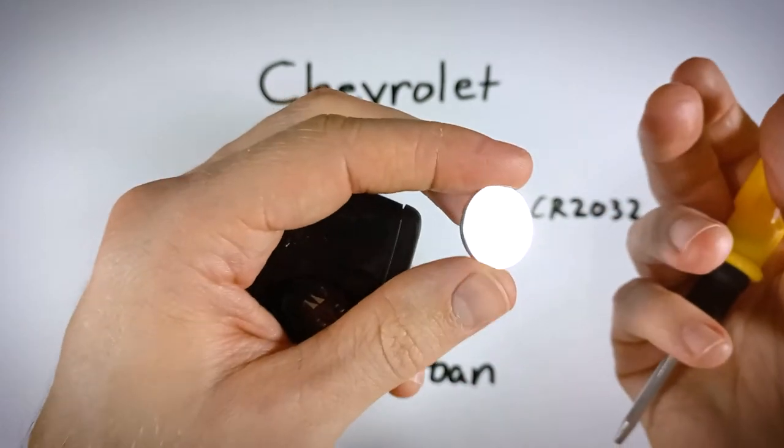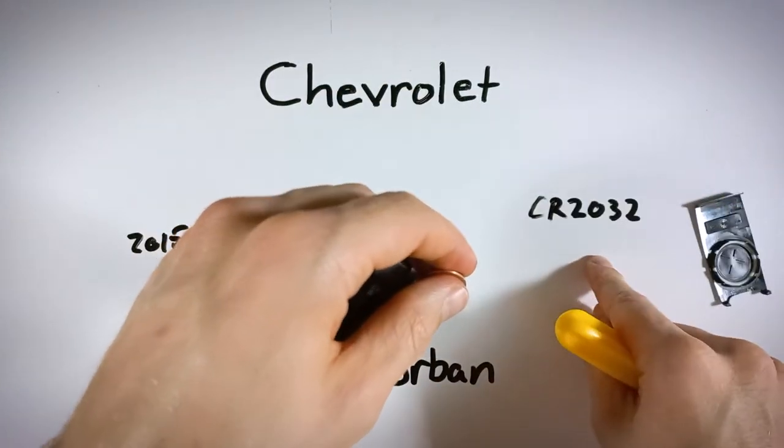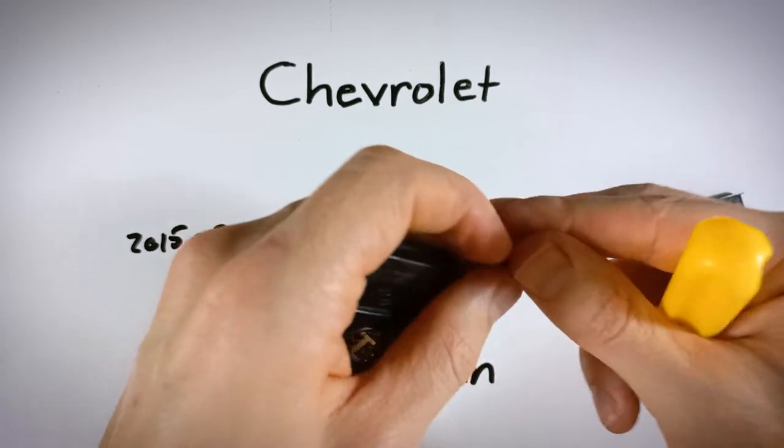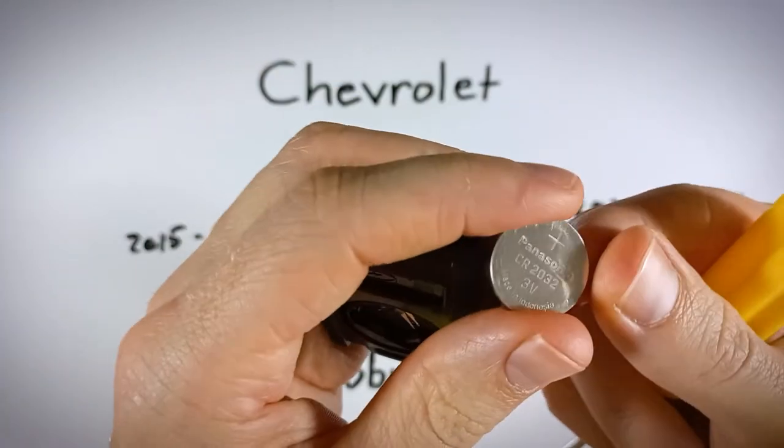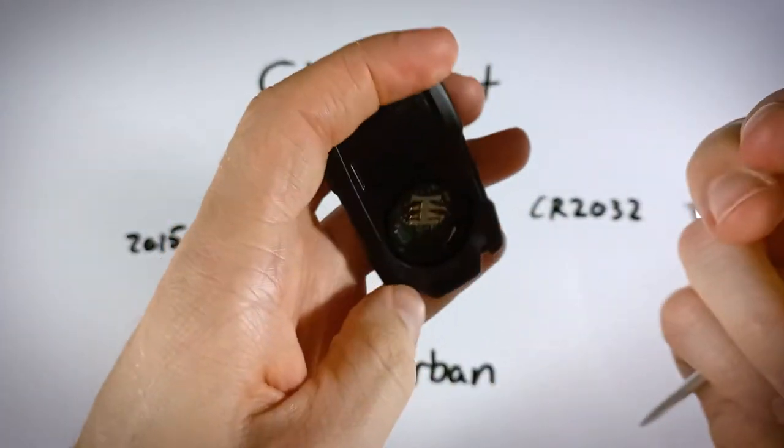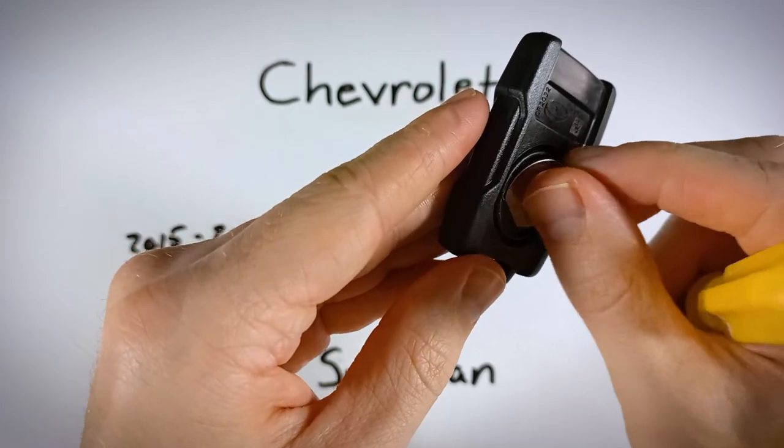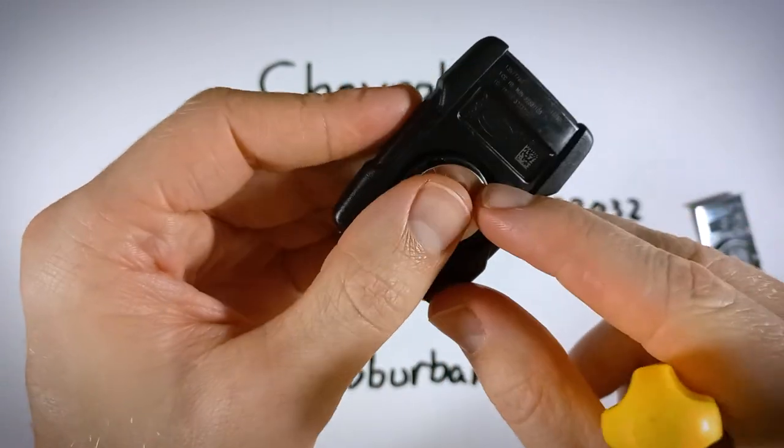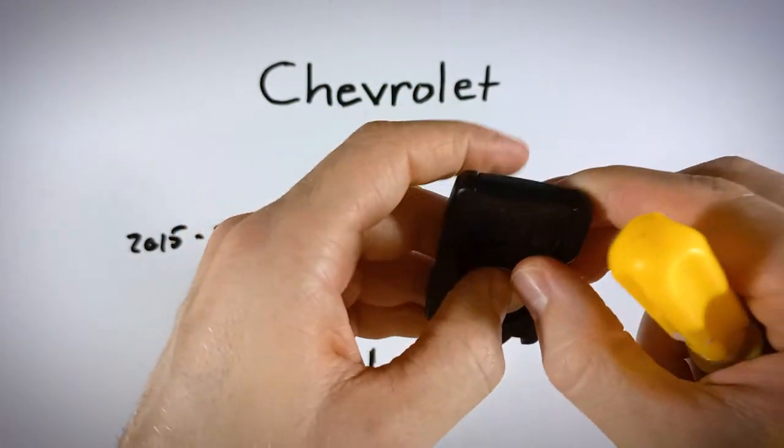Once you've got your battery out, you can dispose of the old one. Make sure your new battery is a 2032 battery. And when you're putting it in, make sure the positive side that has the plus sign on it is facing up. What you want to do is just slide it under the larger tab before clicking it under the smaller tab over there.